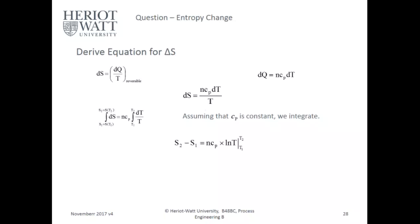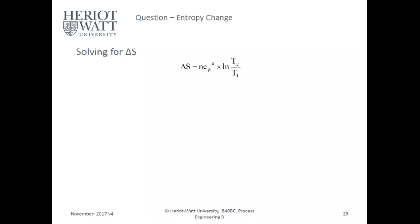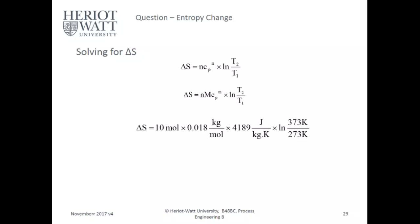So S2 minus S1 equals n·cp·ln(T), evaluated between T2 and T1. You can just write delta S — it suffices, it's just to emphasize there are two different intervals. Solving: delta S equals n·cp·ln(T2/T1).